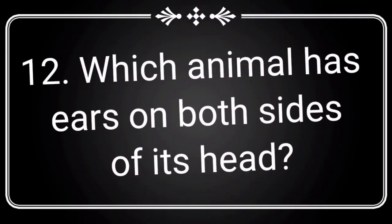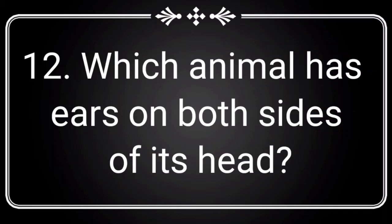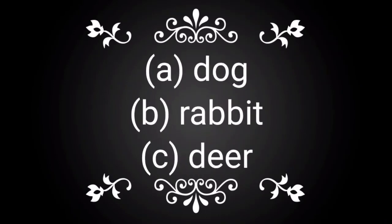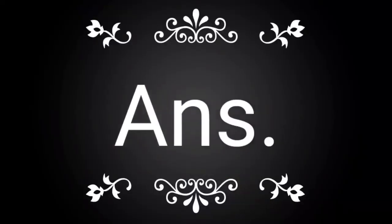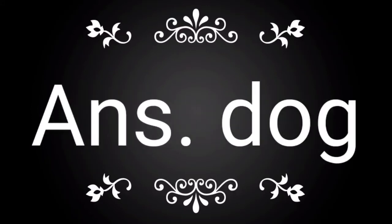Question number 12: Which animal has ears on both sides of its head? You have three options — Option A: dog, Option B: rabbit, Option C: deer. Think the correct answer within 10 seconds. The correct answer is dog. Yes, dog is the correct answer for this question.